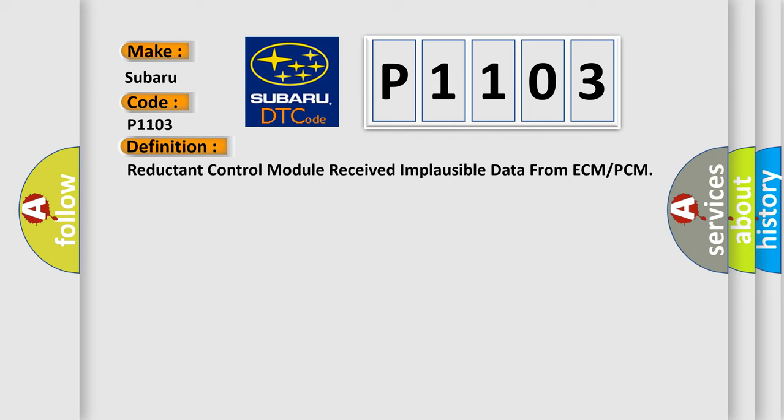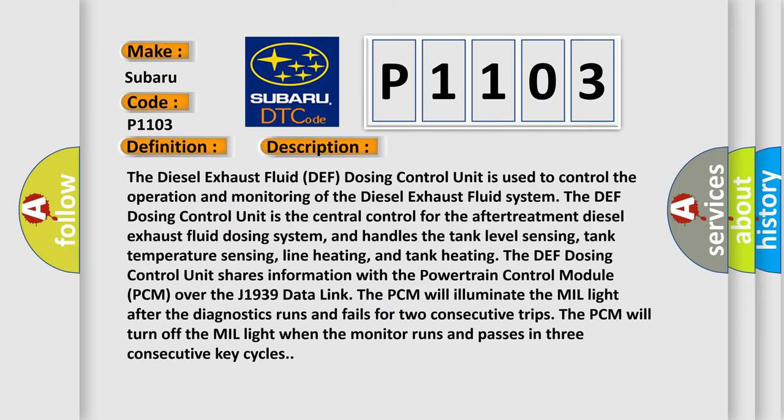And now this is a short description of this DTC code. The diesel exhaust fluid DEF dosing control unit is used to control the operation and monitoring of the diesel exhaust fluid system. The DEF dosing control unit is the central control for the after-treatment diesel exhaust fluid dosing system, and handles the tank level sensing, tank temperature sensing, line heating, and tank heating.